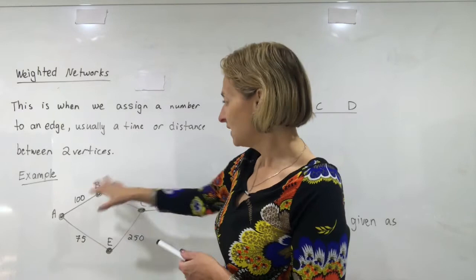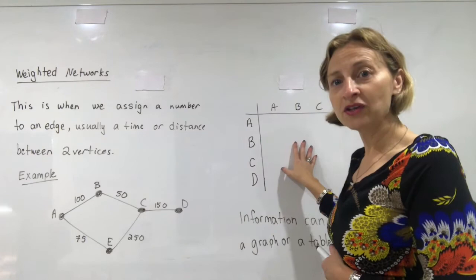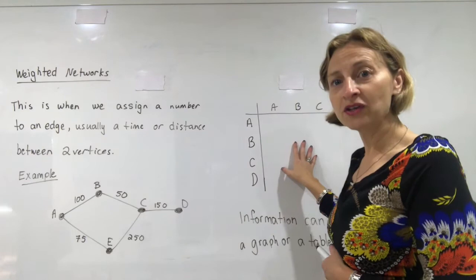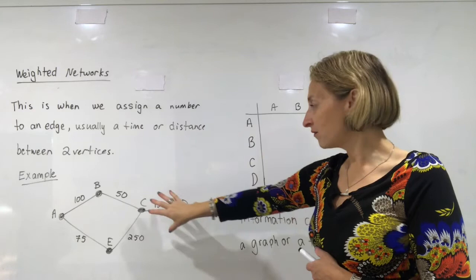Now this information can either be represented as a network graph or as a table and you have to know how to get from one to the other and vice versa. So you've got to be able to from the graph get the table and from the table to get the graph. So let's start by using our graph and drawing our table.